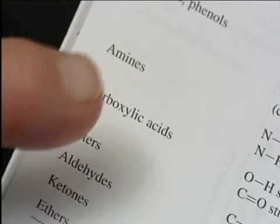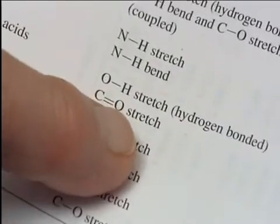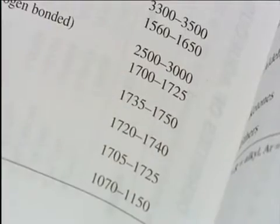For historical reasons, and because the numbers are easy to work with, chemists dealing with IR spectra use units called wave numbers, measured in centimeters to the minus one, which are proportional to frequency.